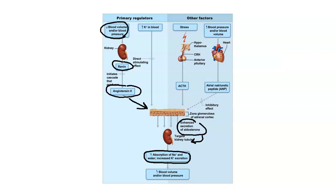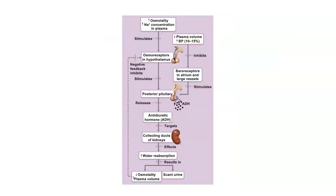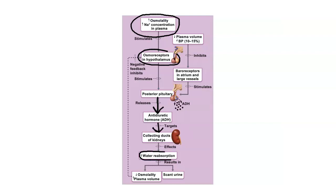Aldosterone is released and targets the kidneys, causing sodium retention. That makes our body fluids more salty — a higher salt concentration. The hypothalamus senses that higher salt concentration and causes the posterior pituitary to release ADH. ADH also targets the kidneys, causing water retention. That increases blood volume and therefore increases blood pressure.